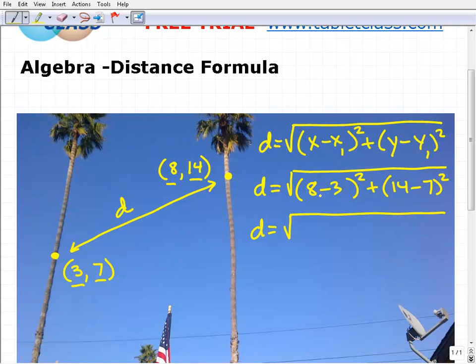This is going to be 8 minus 3 squared, which is going to be 5 squared. Notice I'm just going to write my steps one at a time. I'm not trying to do the entire problem in one step. 14 minus 7 is 7, so that's going to be 7 squared.